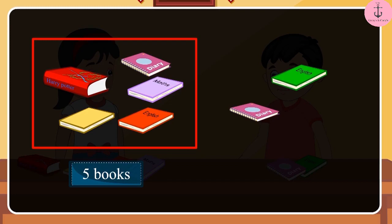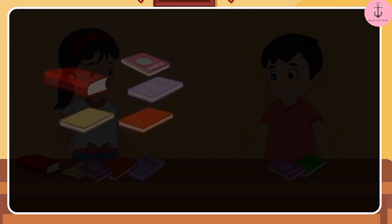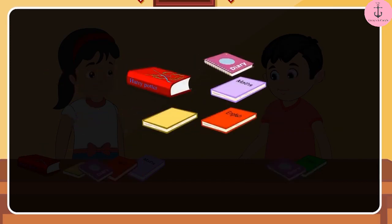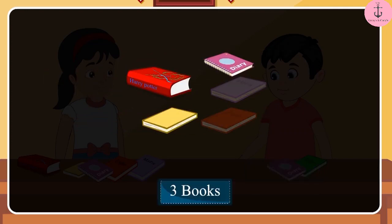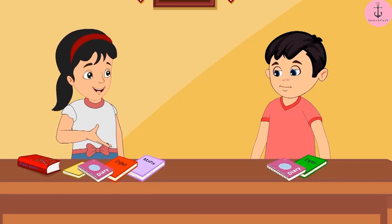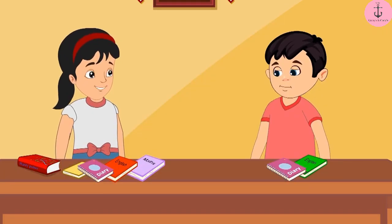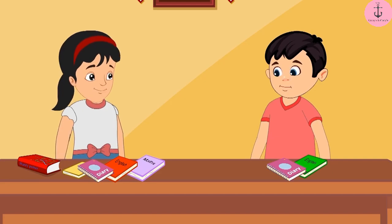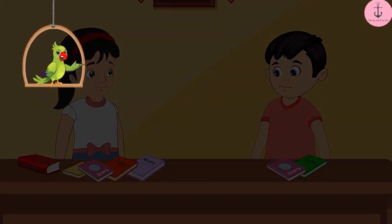That's okay, Pinky, let me explain. You have five books and I have two. So if we subtract two from five, there will be three left. This means you have three more books than me. Did you understand? Yes, let's quickly go and donate these books. So, children, can you also find the difference between two numbers in this way?